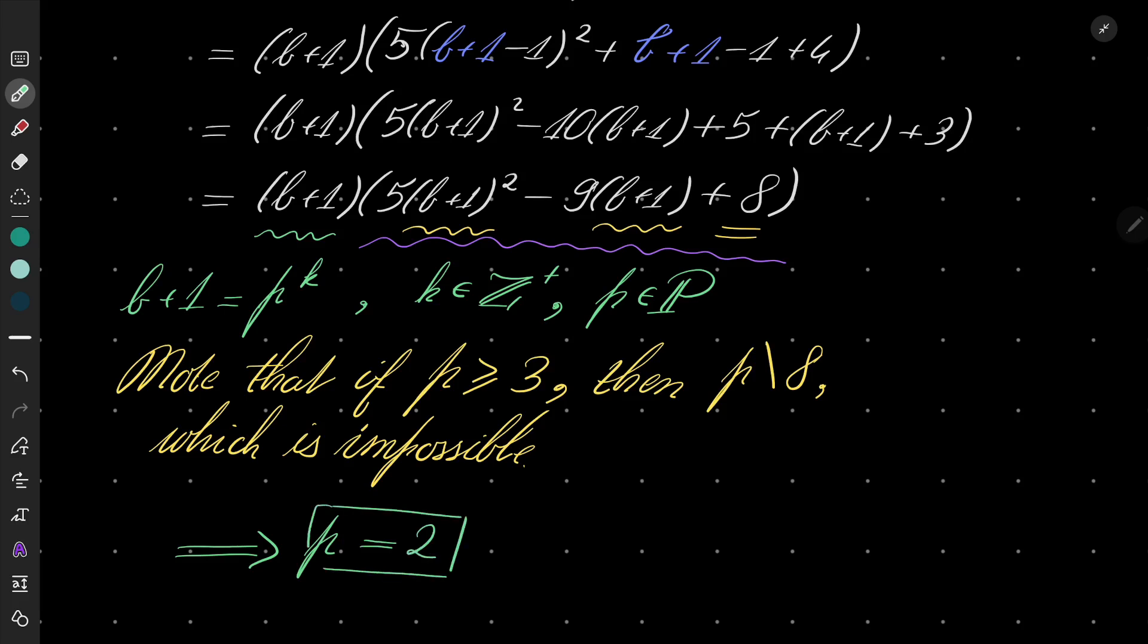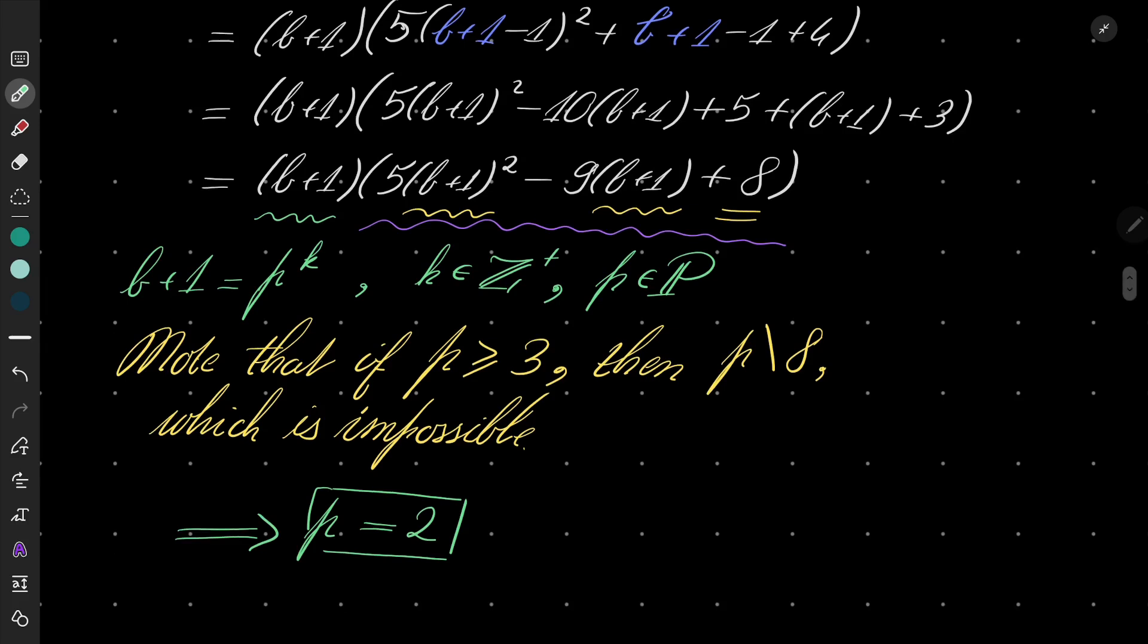Now we know something. Moreover, remember that B equals 2 to the power of K minus 1, and B is greater than or equal to 7. Because it's given in our problem statement that B is greater than 6, which means that this exponent K must be 3 or greater.